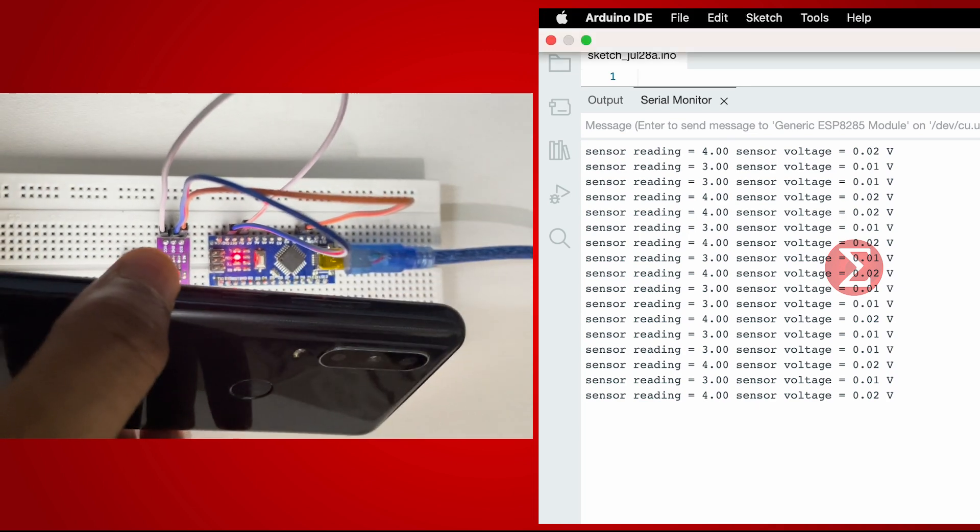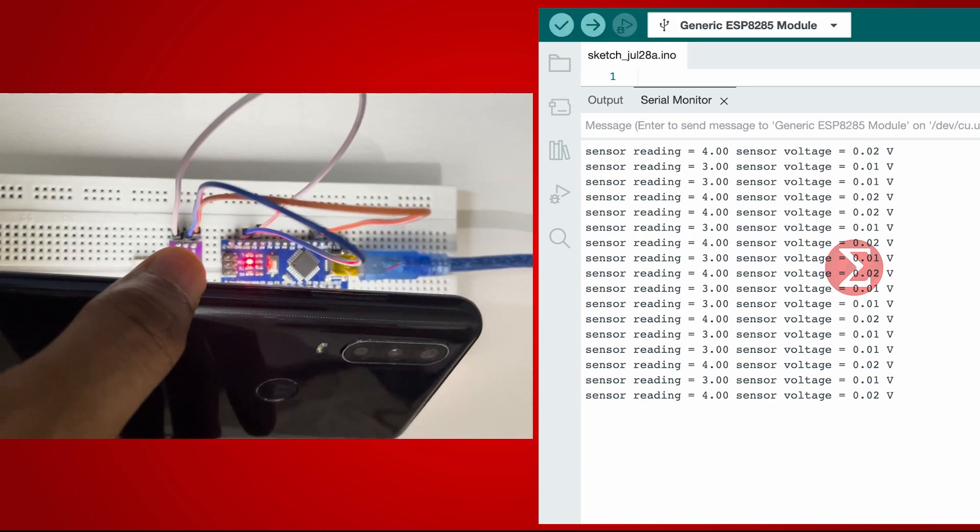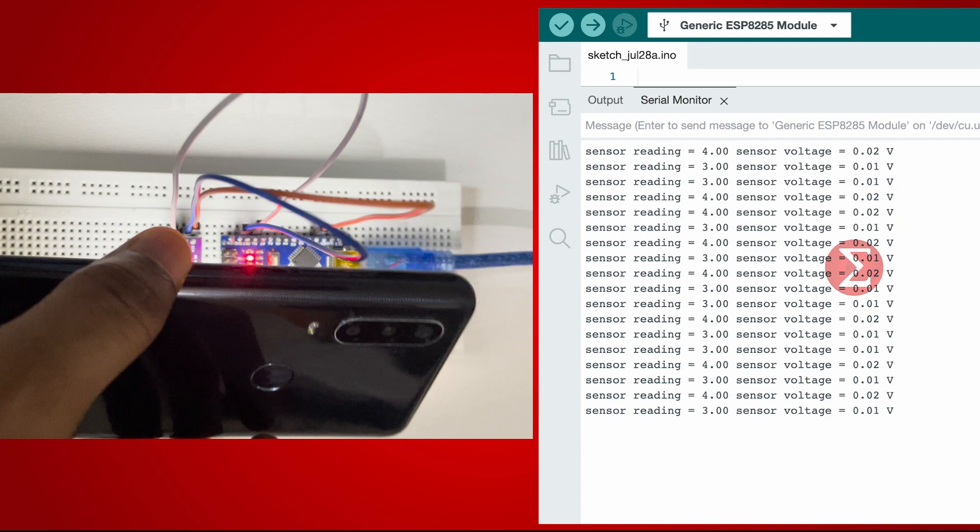On bringing the mobile phone near the UV sensor, you can see the corresponding values of sensor reading and sensor voltage on the output terminal.